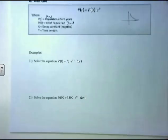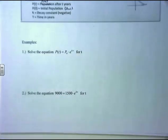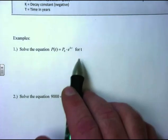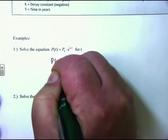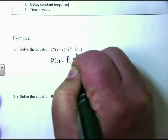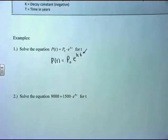For our pre-chapter quiz, we want you to get familiar with these equations. Here's the equation: P of T equals P naught times E to the K times T. Solve this for T. Notice where the variable is located — T is in the exponent of an E. This goes back to why we needed to cover exponential and logarithmic material in earlier sections.